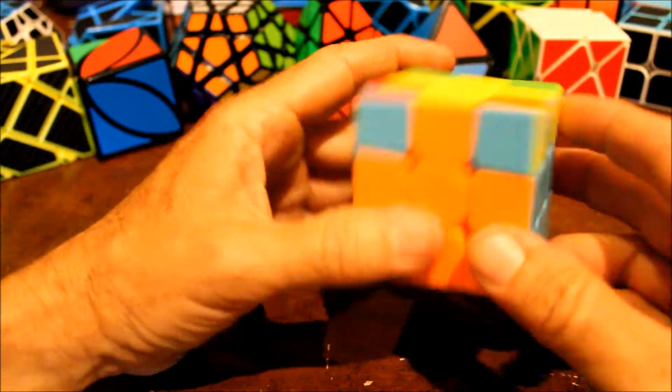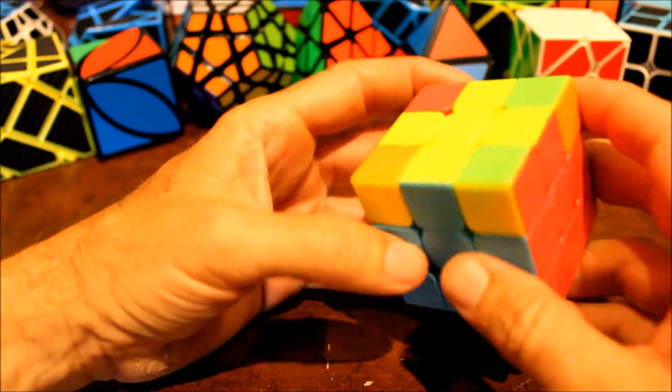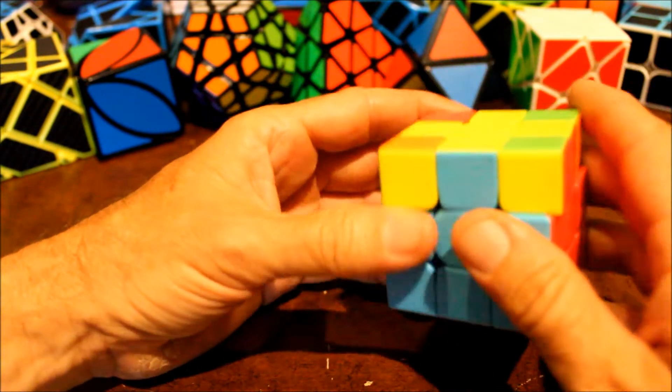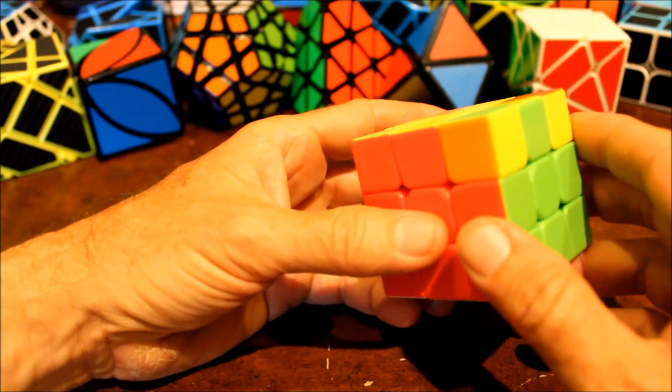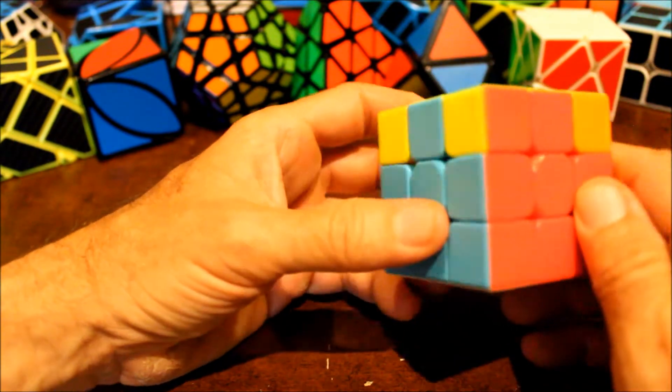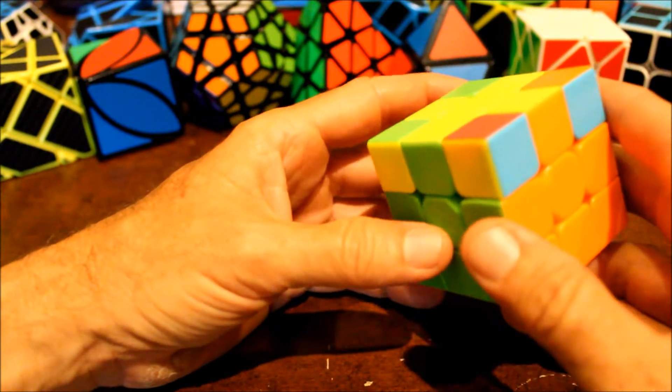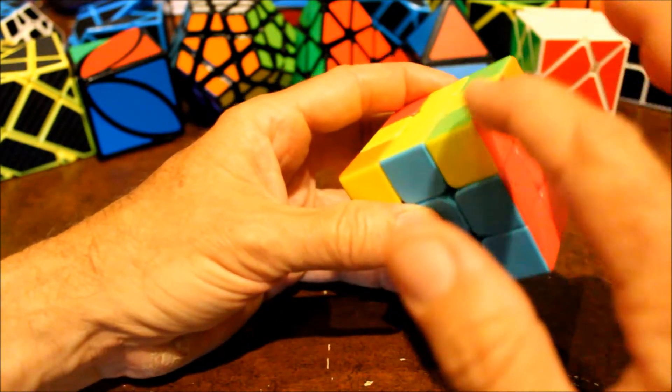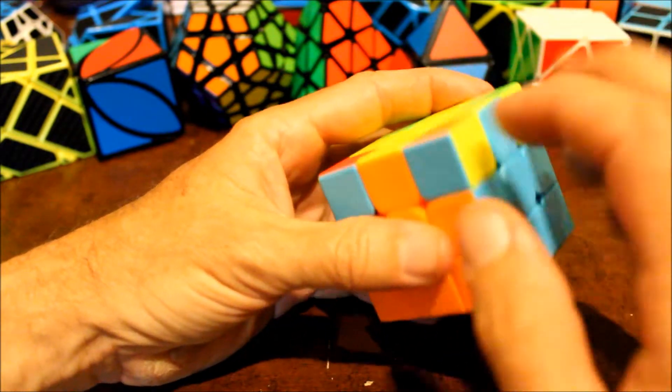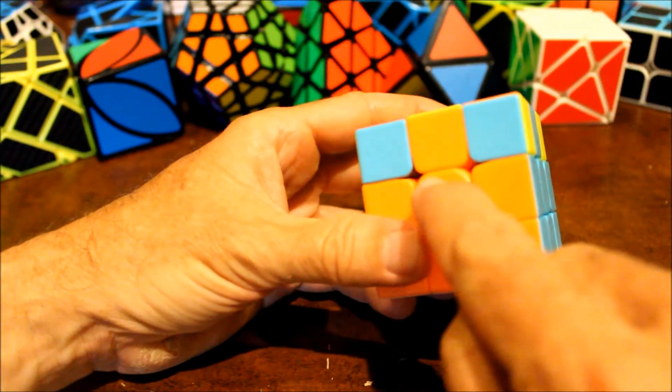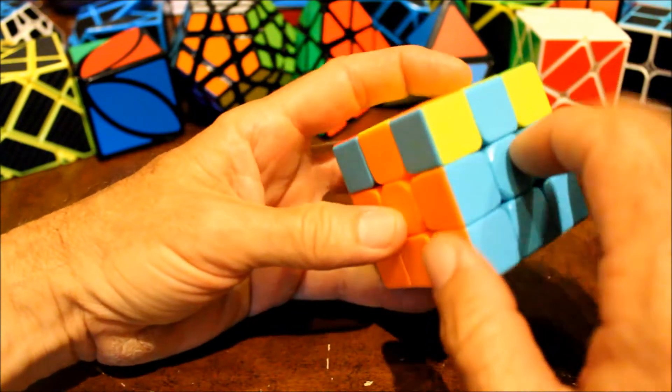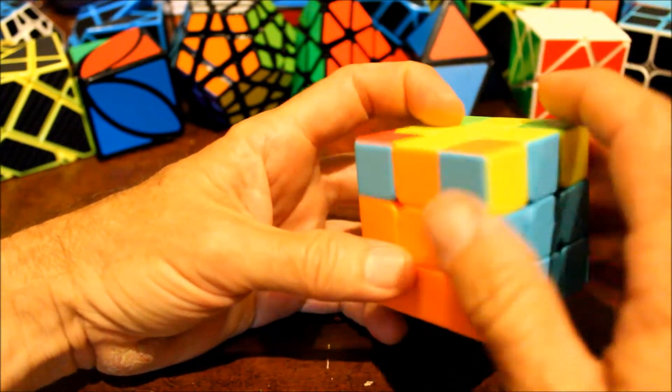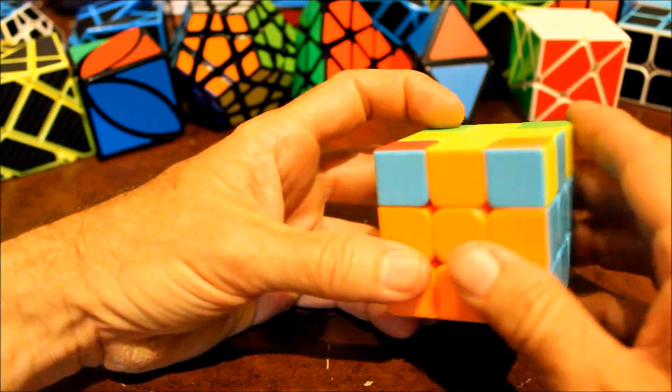Okay, here is part three of part three. This is positioning the top corners correctly. Much of the time you will find one of them already correct. So let's try to find one. That's wrong. This one's right. So here we have the orange, blue and yellow centers, the yellow, blue and orange corner. So this is in the right place but it just is not oriented correctly.